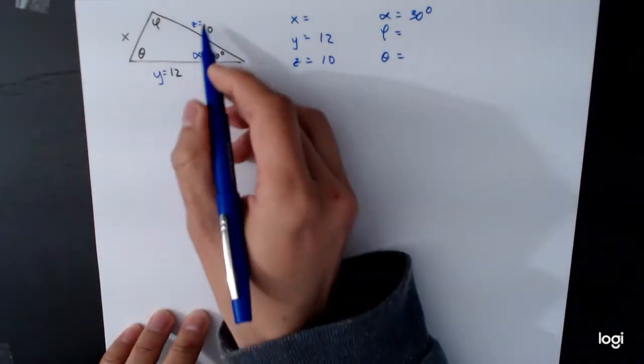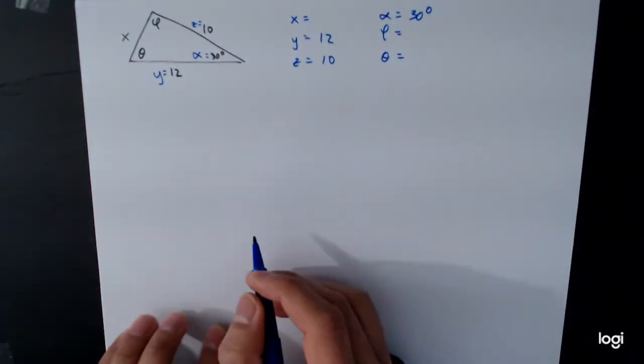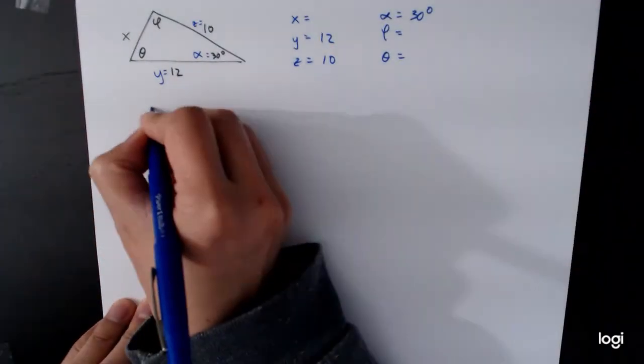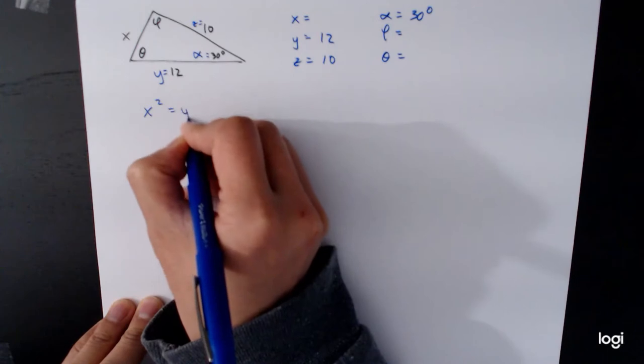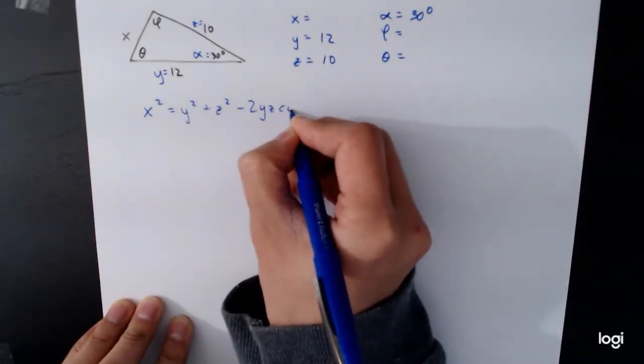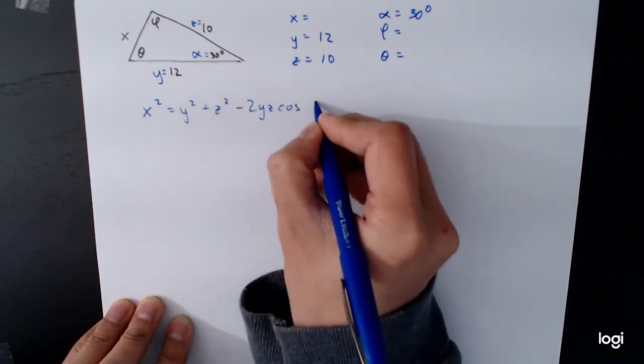So we have side, angle, side. We have two sides and the angle in between them. And so that lets us set up our law of cosines. x squared is equal to y squared plus z squared minus 2yz cosine of the angle between them, which is alpha.